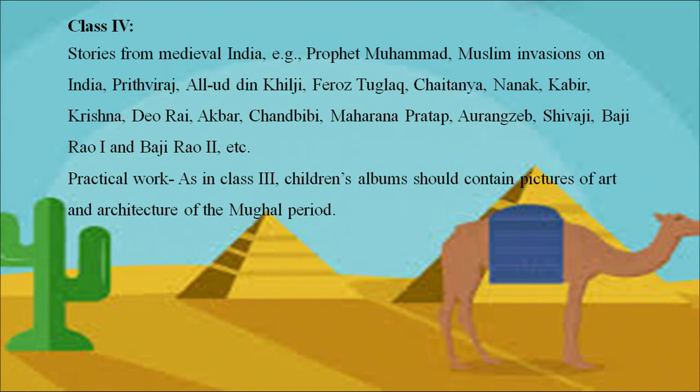At Class 4, students study stories from medieval India — for example, Prophet Muhammad, Muslim invasions of India, Prithviraj, Alauddin Khilji, Firoz Tughlaq, Chaitanya, Nanak, Kabir, Krishnadeva Raya, Akbar, Maharana Pratap, Aurangzeb, Shivaji, Baji Rao 1 and Baji Rao 2, etc. Practical work, as in Class 3, includes an album of pictures of art and architecture of the Mughal period, which helps inculcate aesthetic sense about Indian society and culture.